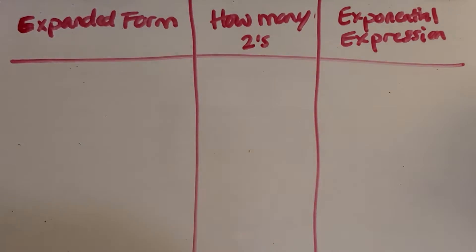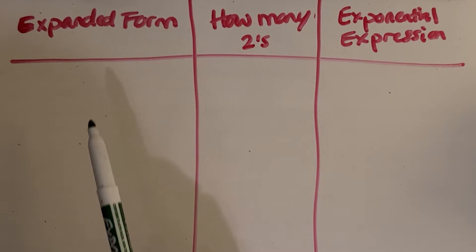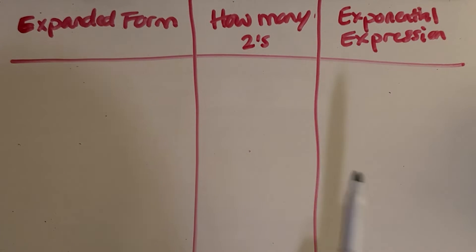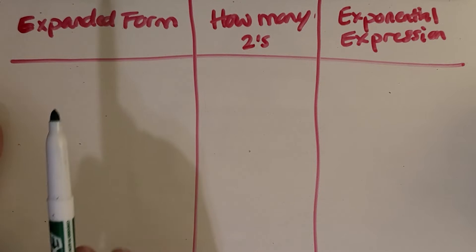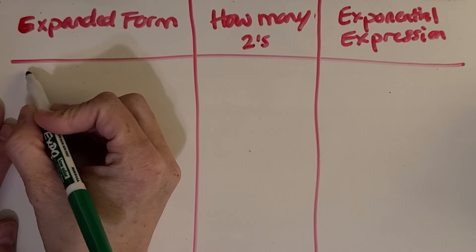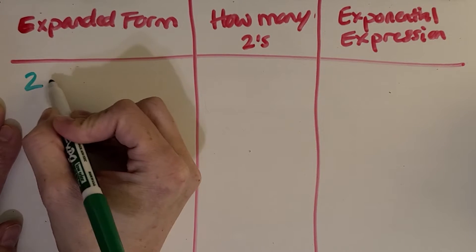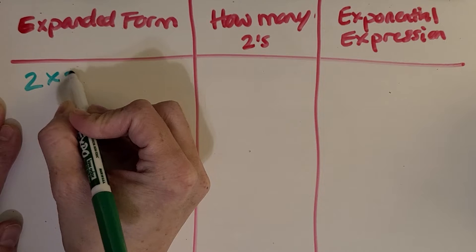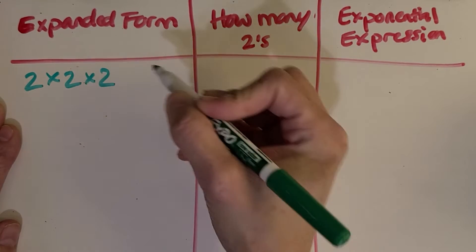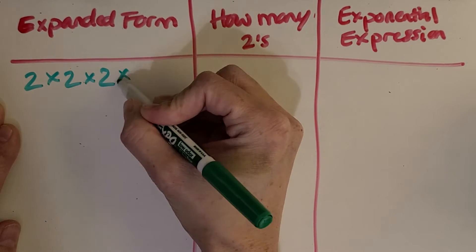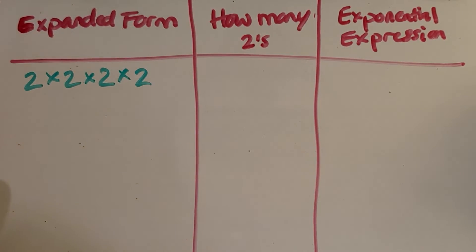Now I think it's time to head over to the whiteboard and try some more problems with exponents to get some more practice. So I want to show you three different things. We can write a number in expanded form like 2 times 2 times 2 times 2 — so expanded.